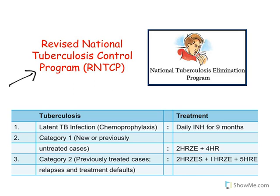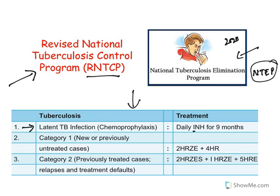India followed the Revised National Tuberculosis Control Program (RNTCP), which from 2020 onwards was renamed the National Tuberculosis Elimination Program (NTEP). For latent TB infection, daily isoniazid is given for nine months. For Category 1 (first-time TB), two months of isoniazid, rifampin, pyrazinamide, and ethambutol are given, followed by four months of isoniazid and rifampin — totaling six months.